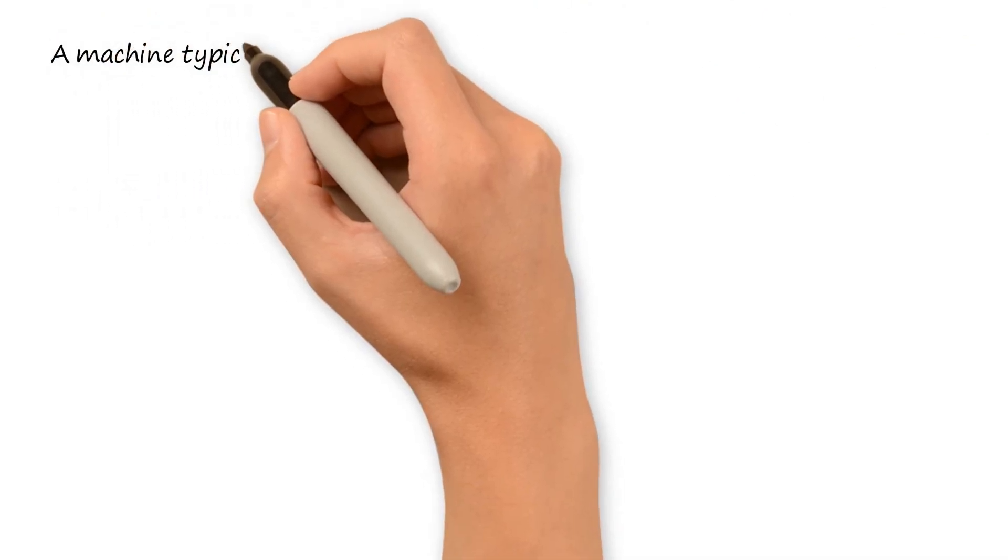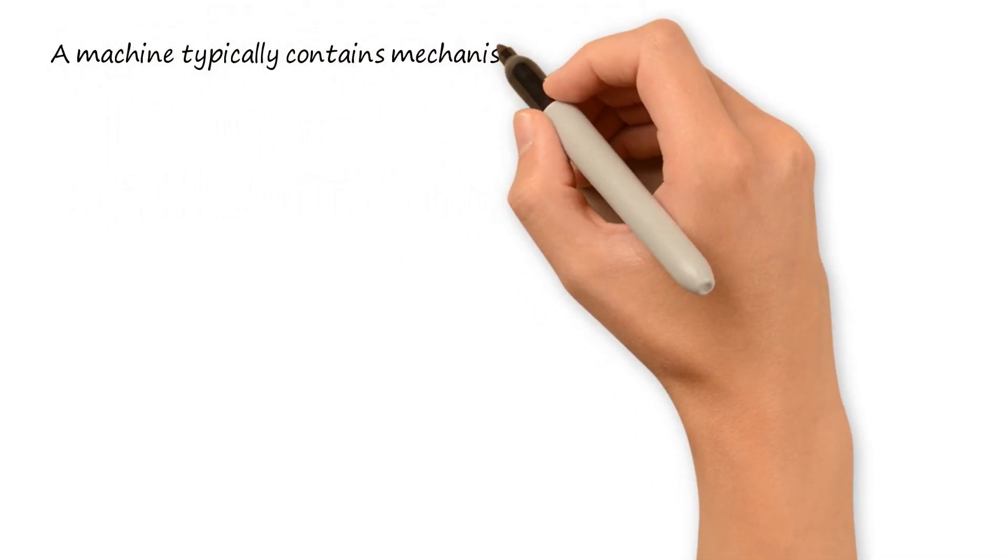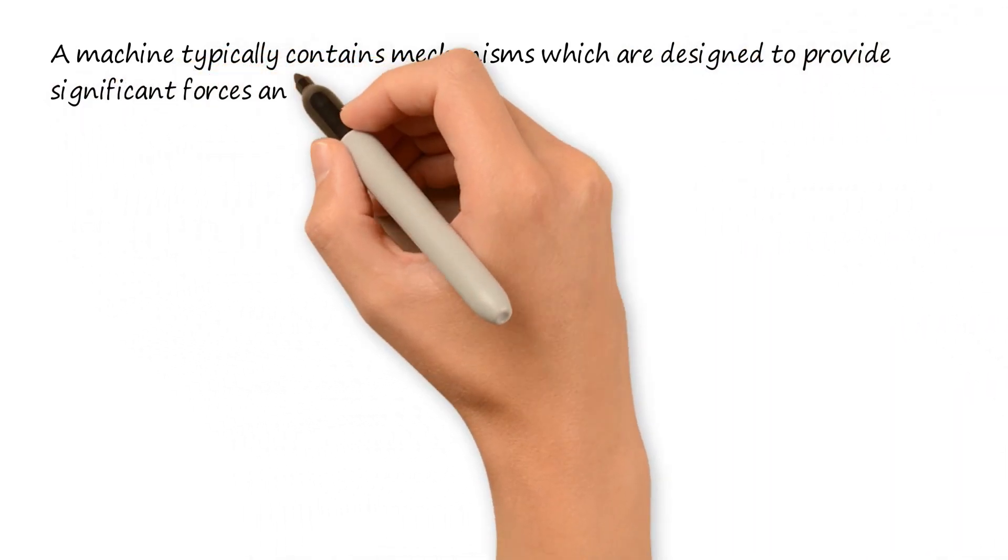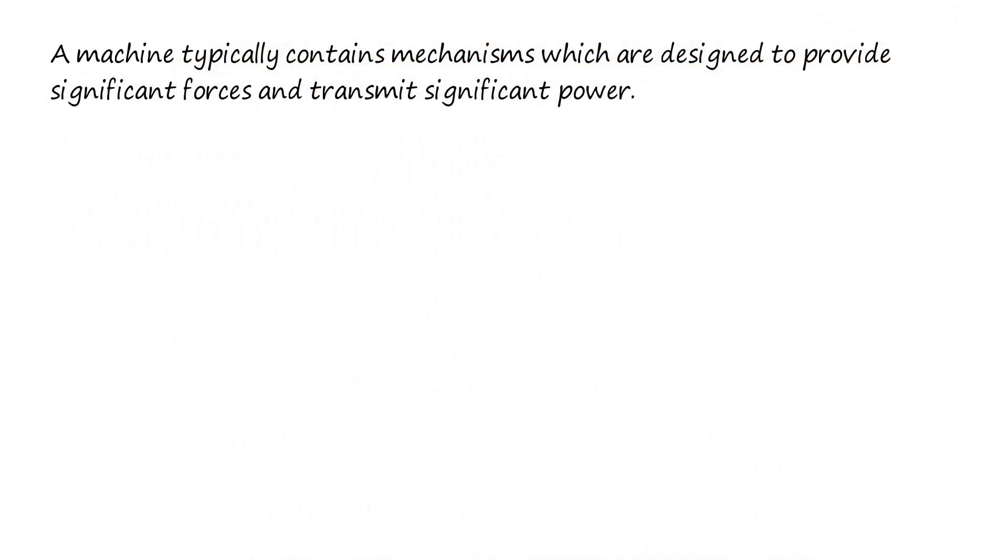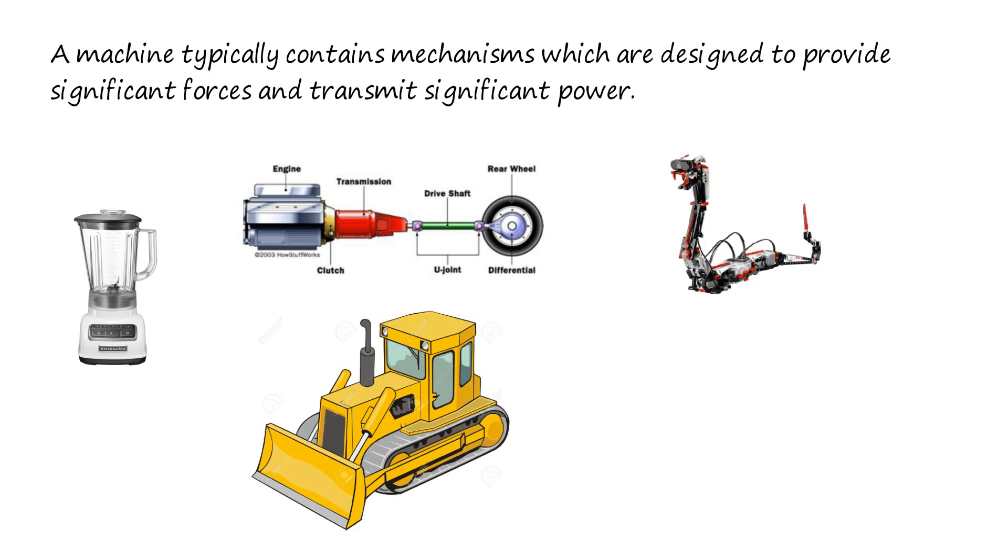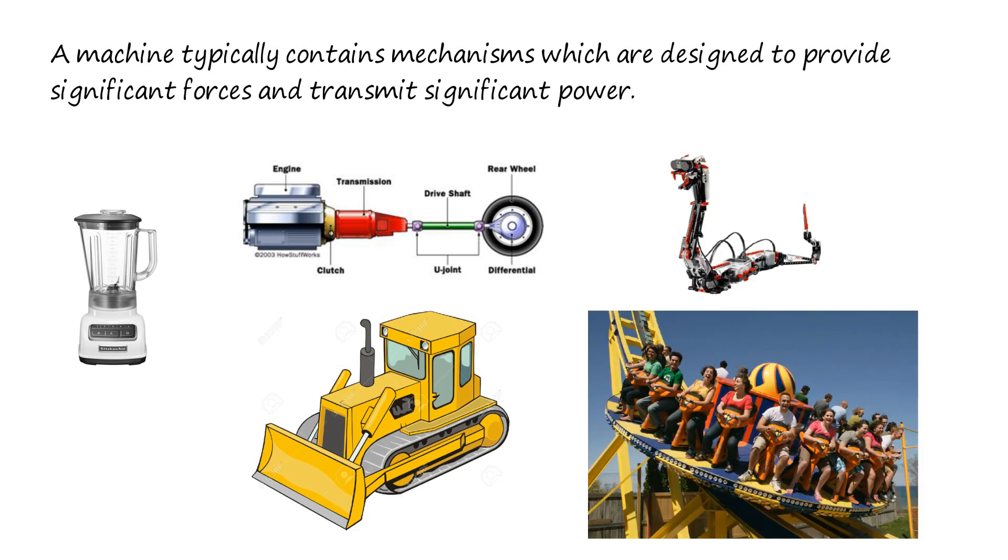A machine typically contains mechanisms which are designed to provide significant forces and transmit significant power. Some examples of machines are a food blender, an automobile transmission, a bulldozer, a robot, and an amusement park ride.